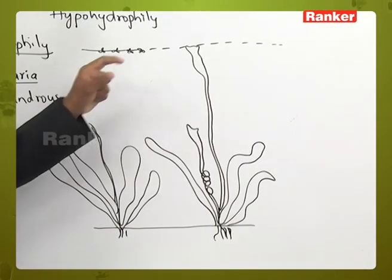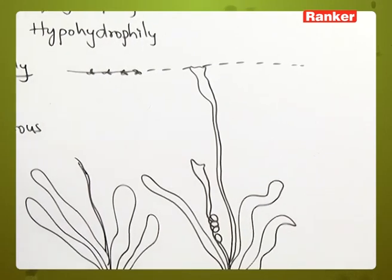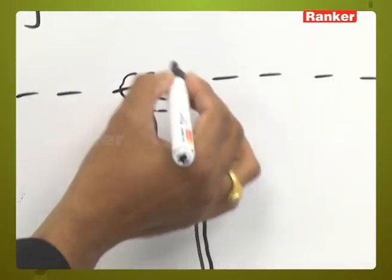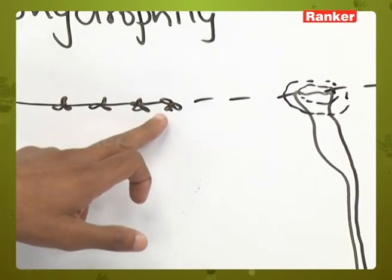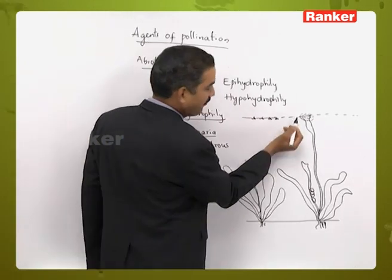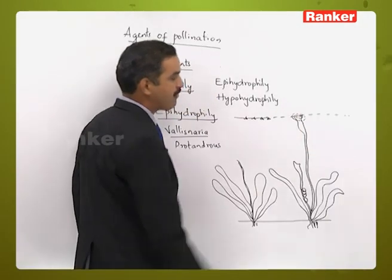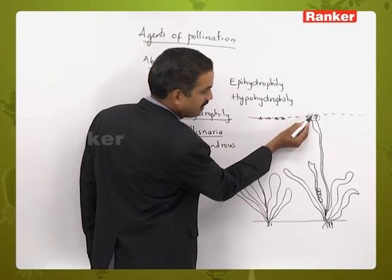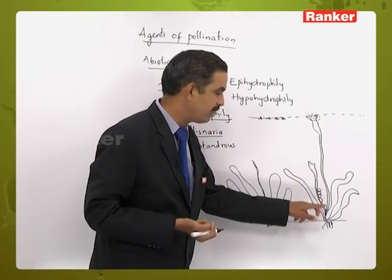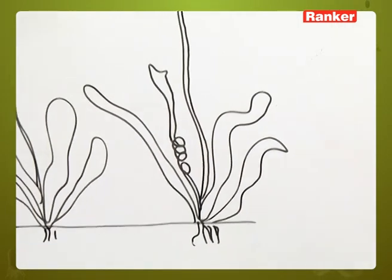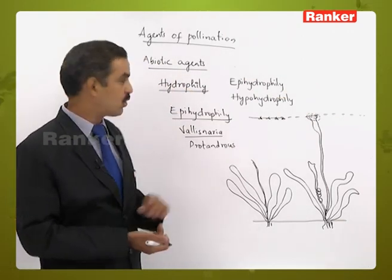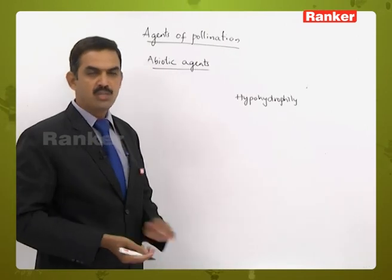When the female flower reaches the water surface, a depression-like structure forms around the stigmatic surface. Passively moving male flowers enter this depression, move in circles around the stigmatic surface, and at some point stick to it. Once the stamens attach to the stigma, the peduncle of the female flower coils again and returns to its original position. This is epi-hydrophily — pollination on the upper surface of water.